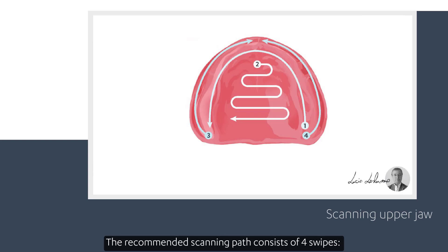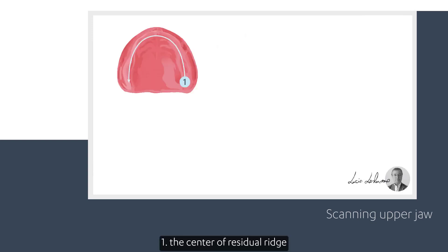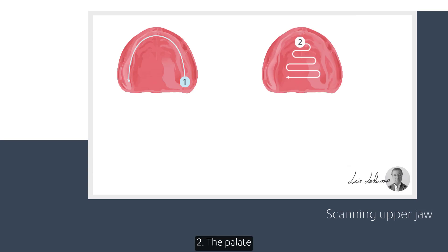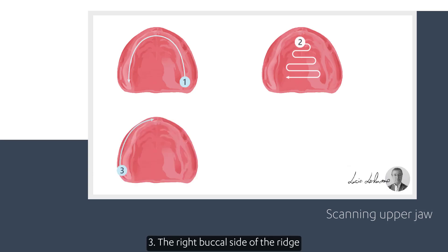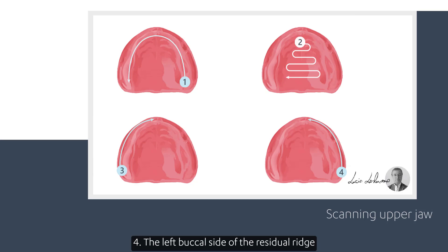The recommended scanning path consists of four swipes: the center of the residual ridge, the palate, the right buccal side of the ridge, and the left buccal side of the residual ridge.